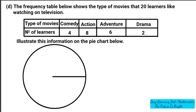The types of movies are comedy, action, adventure, and drama. This is just presenting the reality of what movies learners enjoy. Comedy has 4 learners, action has 8 learners, adventure has 6 learners, and drama has 2 learners. The question asks us to illustrate this information on the pie chart below.